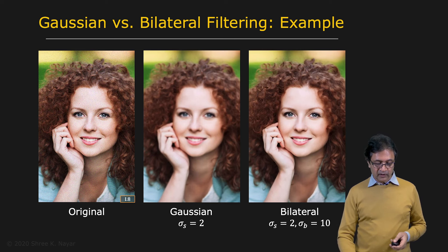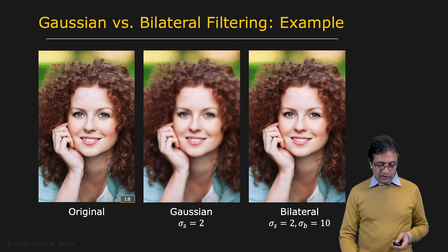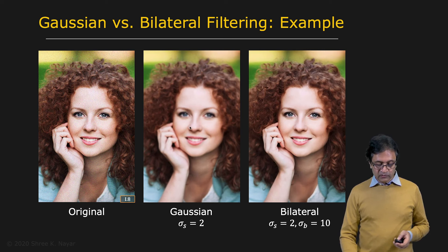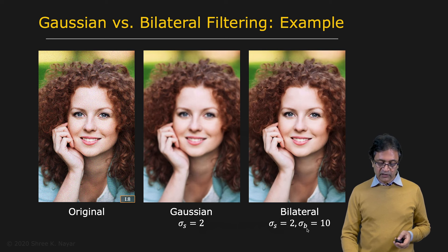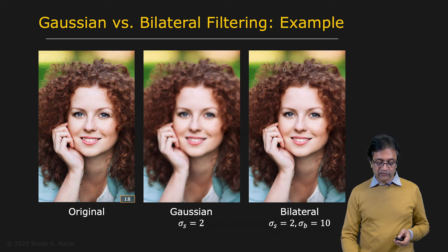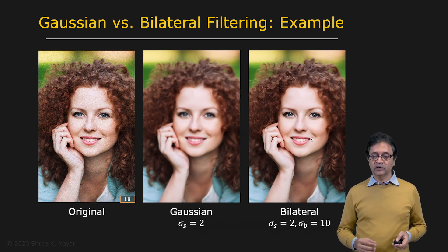Here is an example. Here you see an original image that has some noise in it — if you look closely, you'll see that it is grainy. If you apply Gaussian filtering with sigma equal to 2, you see that you get a slightly blurry image and the noise hasn't been entirely removed. But if you use a bilateral filter with a spatial sigma of 2 and a brightness sigma of 10, you get a very nice image where literally all the noise has been removed and most of the spatial features have been preserved — especially the eyes and the mouth; all the salient features are preserved.